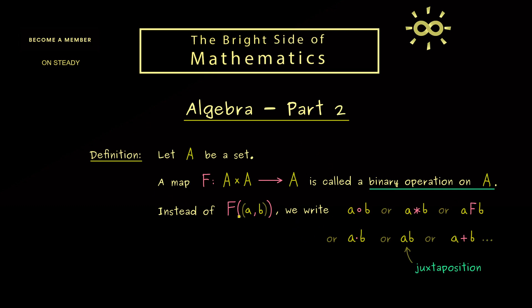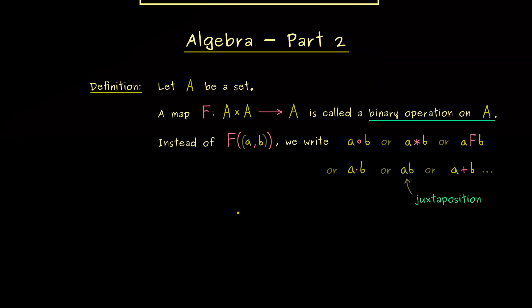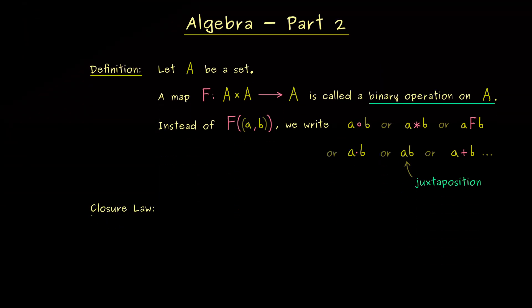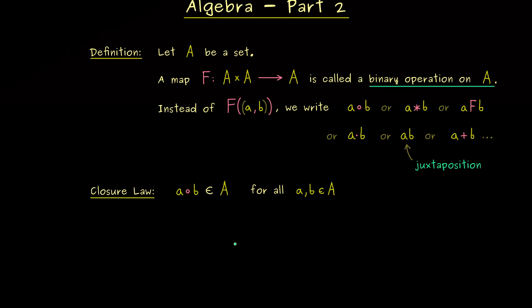Now, in this important definition there is also some law hidden you should always keep in mind. We can call it closure law, but it is indeed a very trivial one. It states that a combined with b is always an element in the set A. This means this fact holds for all inputs a, b in A. Indeed, this is immediately given in the definition, and you might even say there is no other possibility at all. However, sometimes we restrict such a binary operation to a subset of A, and then you only have a binary operation on the subset if this closure law holds for the subset. Therefore, this is the thing you have to check when dealing with subsets.